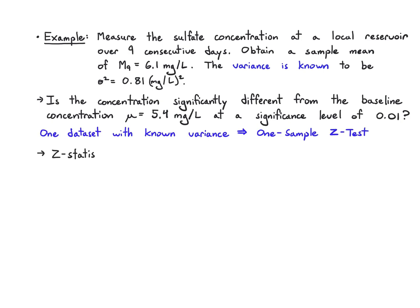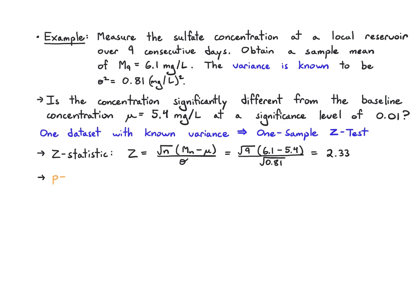First we calculate the z-statistic. That's going to be the square root of n times the sample mean minus the true mean, divided by the standard deviation. That's root 9 times (6.1 minus 5.4) over root 0.81, which ultimately gives us 2.33.